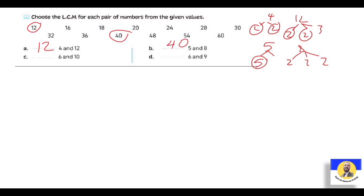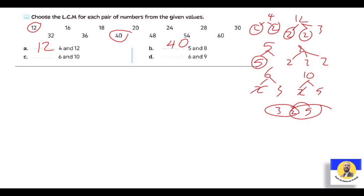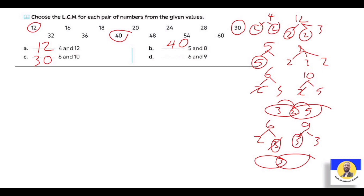Letter C: six and ten. الـ six هي 2 × 3، والـ ten هي 2 × 5. عندنا repeated 2. بالـ Venn diagram: الـ 2 في النص، هنا الـ 3، وهنا الـ 5. يبقى LCM = 2 × 3 × 5 = thirty. Letter D: six and nine. الـ six هي 2 × 3، والـ nine هي 3 × 3. الـ repeating number هي الـ 3. بالـ Venn diagram: الـ 3 في النص، هنا الـ 2، وهنا الـ 3 التانية. يبقى LCM = 3 × 2 × 3 = eighteen.